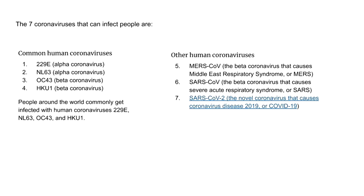You can see that there are seven coronaviruses that can infect people. The common human coronaviruses listed on the left-hand side are the four we discussed in the history: 229E, NL63, OC43, and HKU1. People around the world commonly get infected with these human coronaviruses, and that's what we see here in the US as well — mostly in the winter season. I have actually seen this in our hospital even when SARS-CoV-2 was going around.